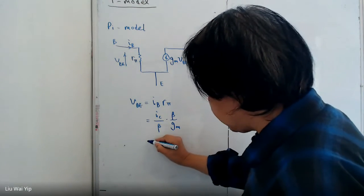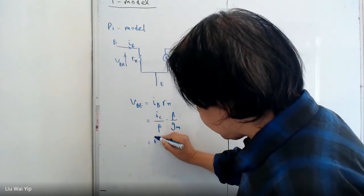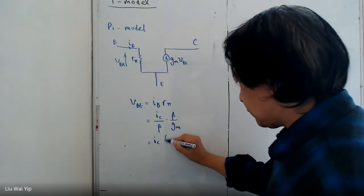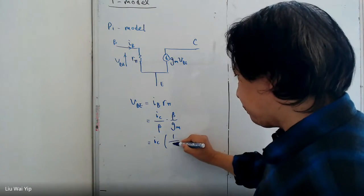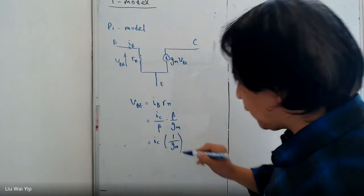So essentially, eventually, you have IC, which is the current times another amount of the system, 1 over GM.